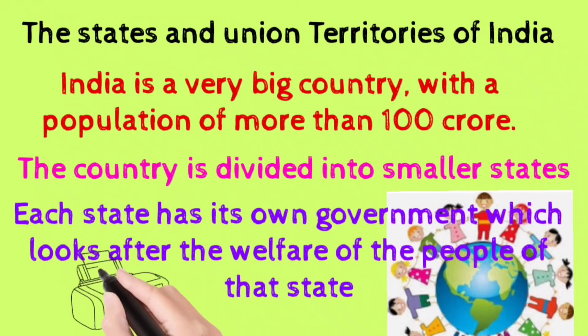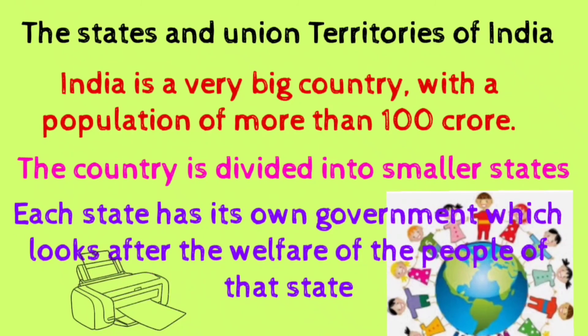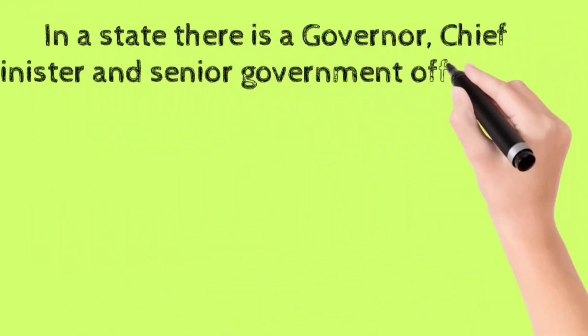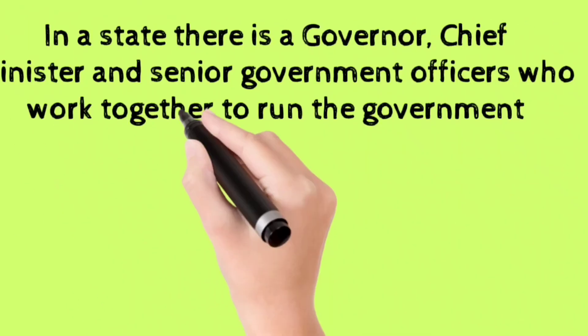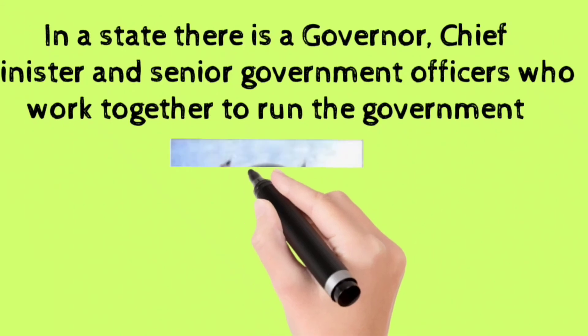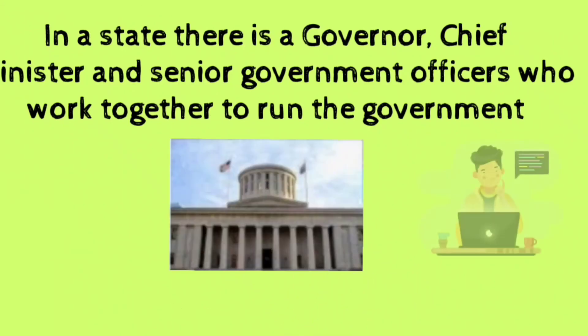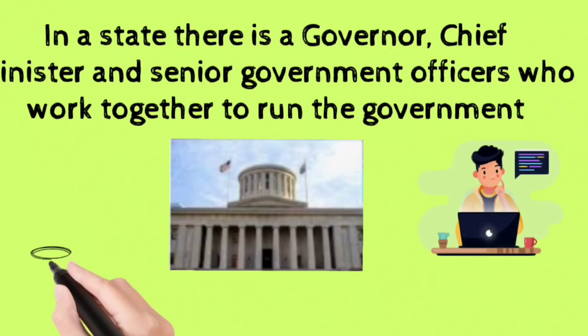In a state, there is a governor, a chief minister, and senior government officers who work together to run the government.